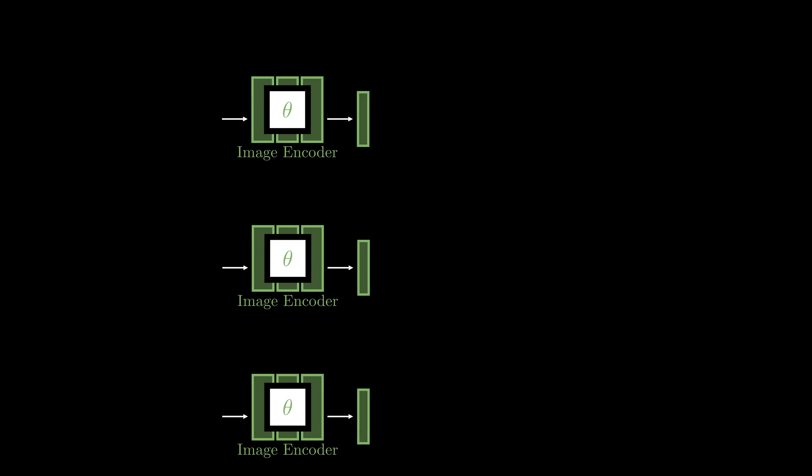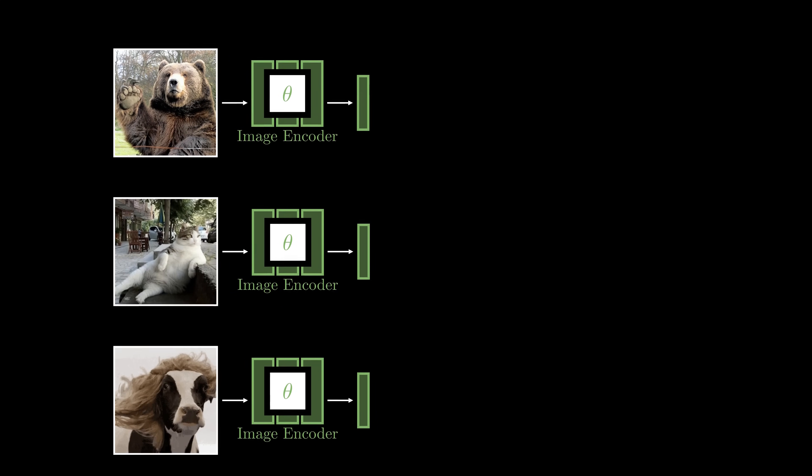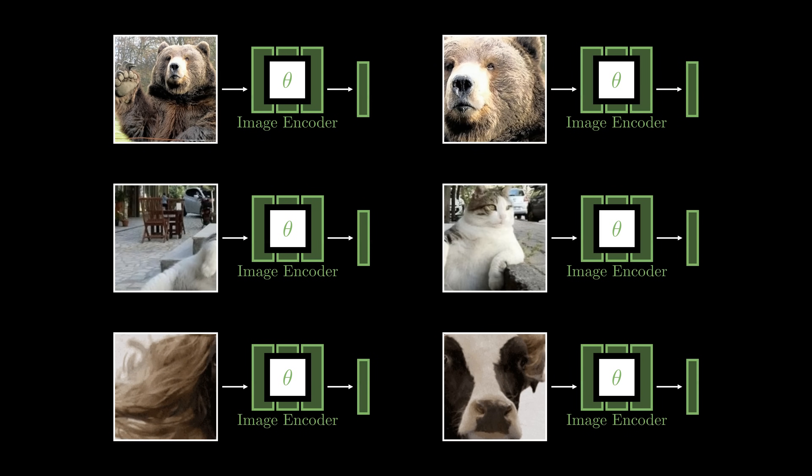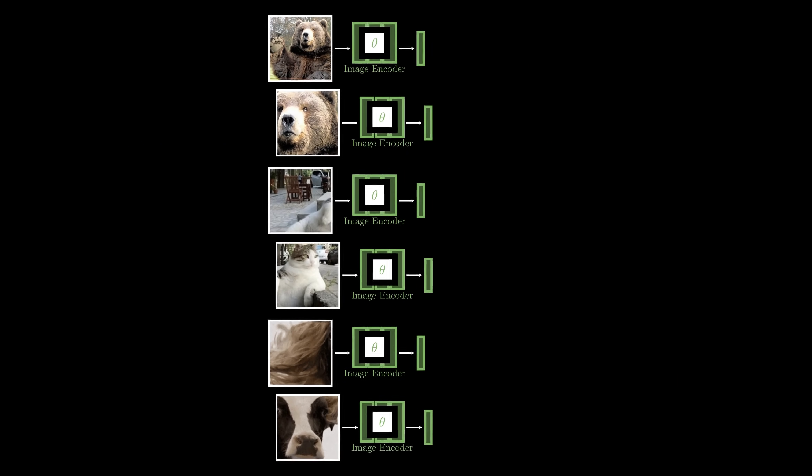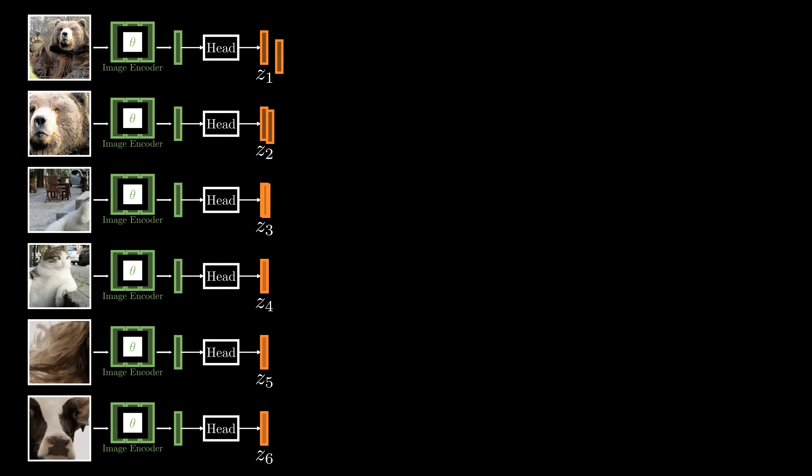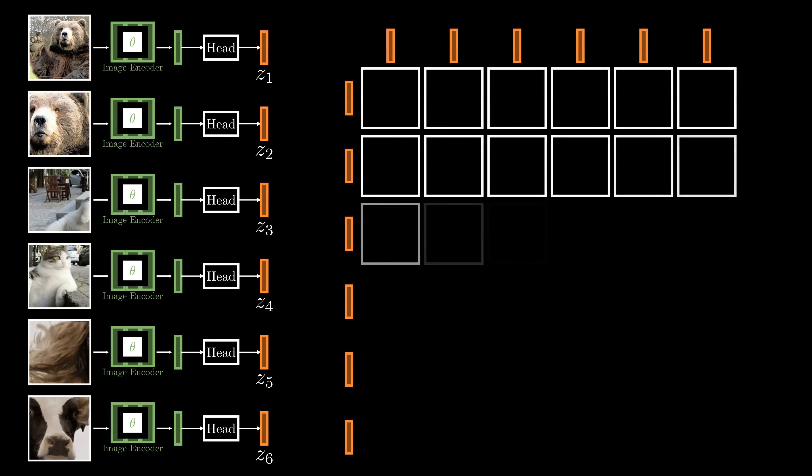Let's revisit the contrastive learning idea. We extract image features from two different augmented views of input images. The objective is to bring the embedding vectors from matching pairs closer, while pushing embeddings of different images far apart. More specifically, we compute the pairwise similarity of all pairs using dot product.